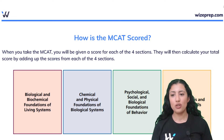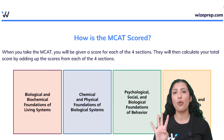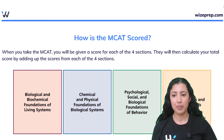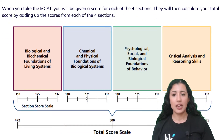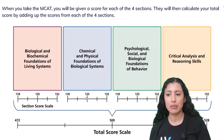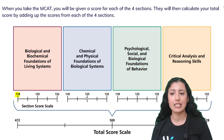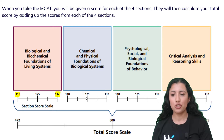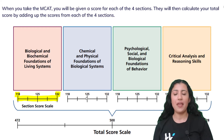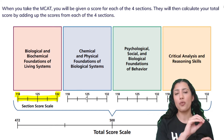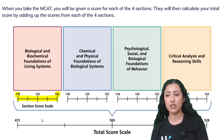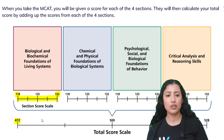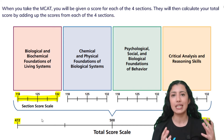So how is the MCAT scored? The MCAT has four different sections, and you'll be given a score for each of those sections. Each section has a minimum score of 118 and a maximum score of 132. To get your total score, they take the score you got for each of the four sections and add them up, so your total score will range from 472 to 528, which is the maximum possible score.